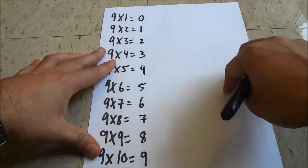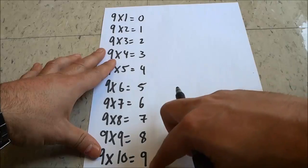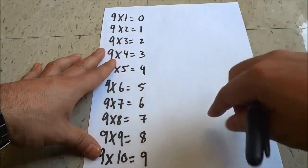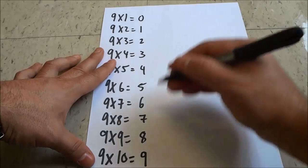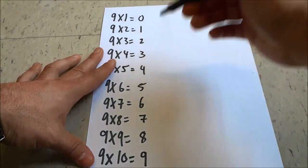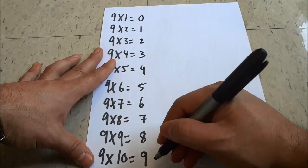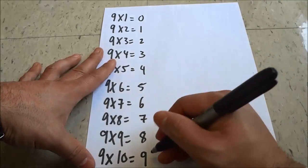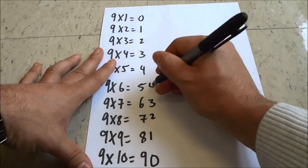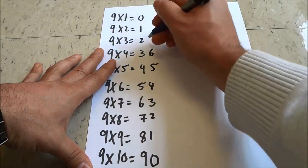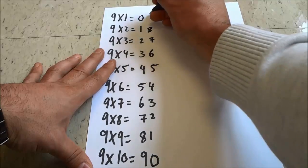And then we are going to do the same thing for the second digit for each of the answers. But I'm going to start at the bottom and do basically the opposite. So it's the same number sequence but I'm starting from the bottom and working my way up to the top. Zero, one, two, three, four, five, six, seven, eight, nine.